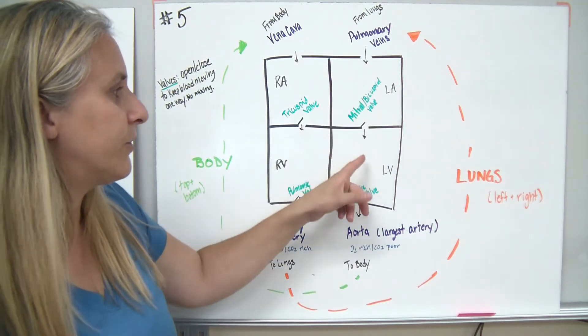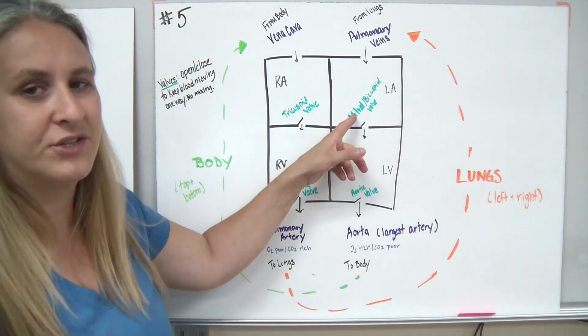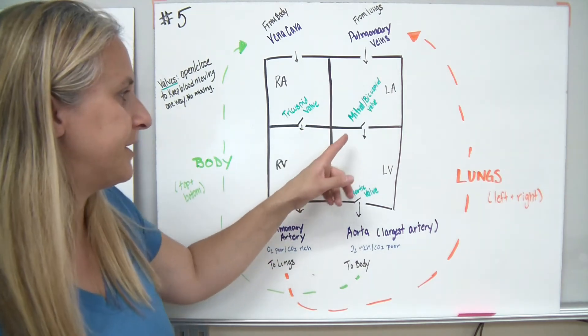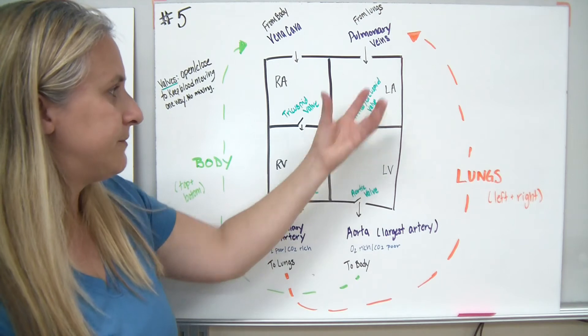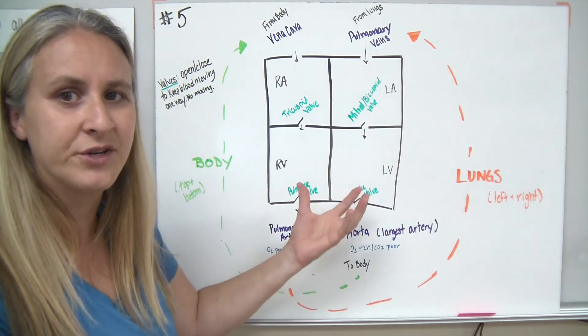And it's going to go through a valve just like it did on the right side. That valve is called a mitral valve or a bicuspid valve. We're going to talk about ways to remember the names in a second. It goes through the valve, squeezes, pumps the blood, goes through the valve down into the left ventricle.